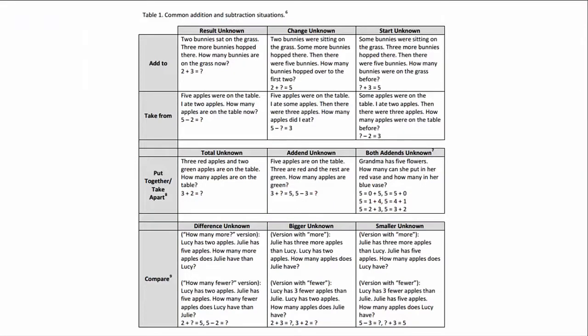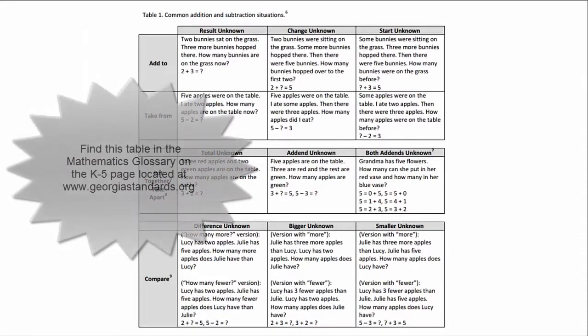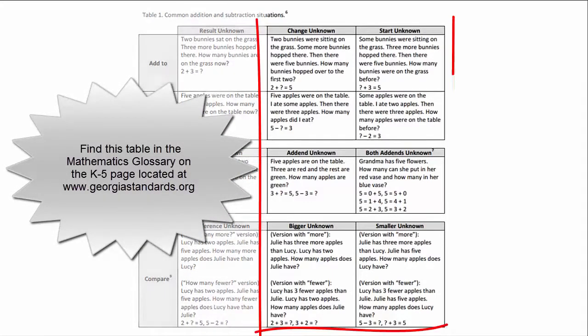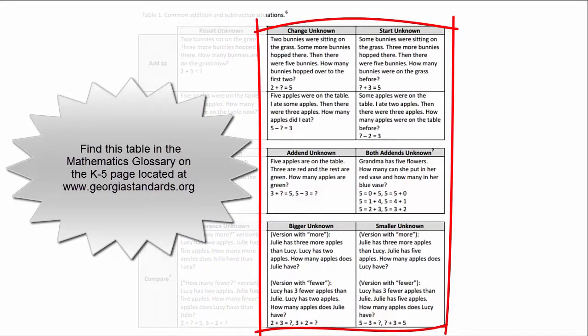In other words, the type of story context where the change or start is unknown. The problems in these two columns are perfect for supporting student proficiency with the standard. This particular table can be found in the mathematics glossary on the georgiastandards.org K5 mathematics homepage.